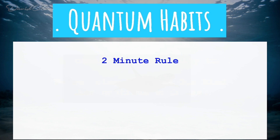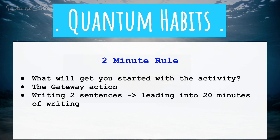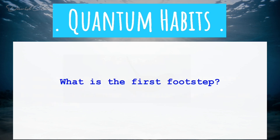The two-minute rule is like a gateway action — the thing that gets us started and creates momentum. Instead of trying to write for 20 minutes, on days where you really don't feel like writing, just say 'write two sentences.' Two sentences takes about two minutes. It keeps the habit going without overwhelming you the way 'write for an hour' would.